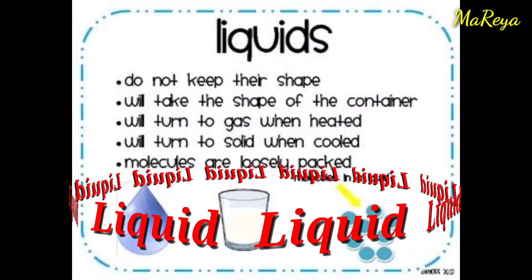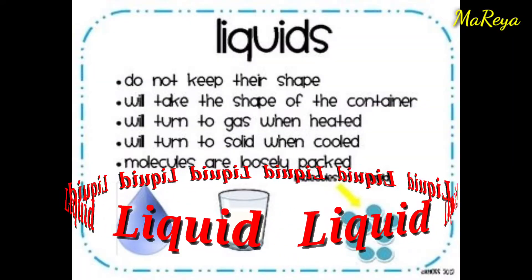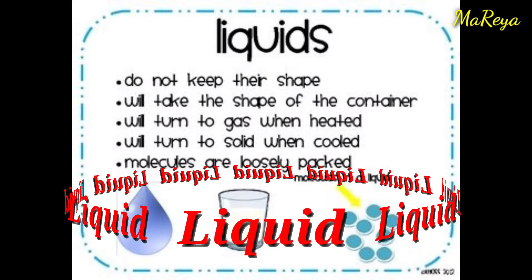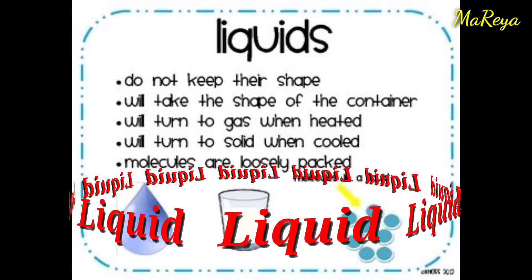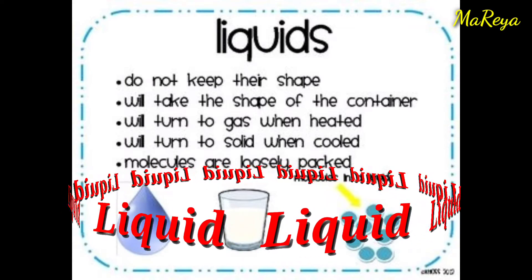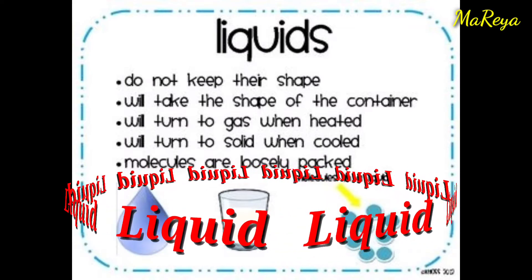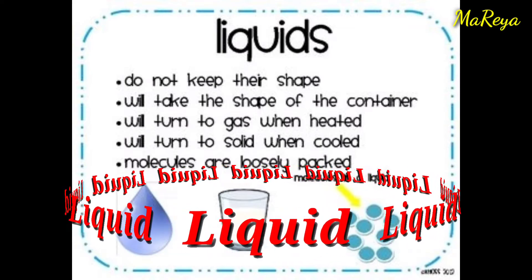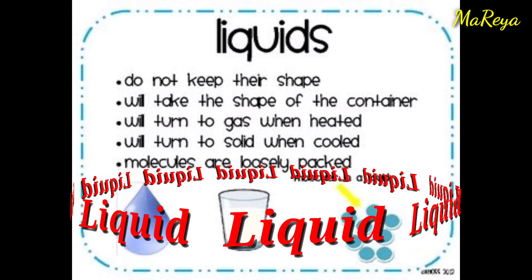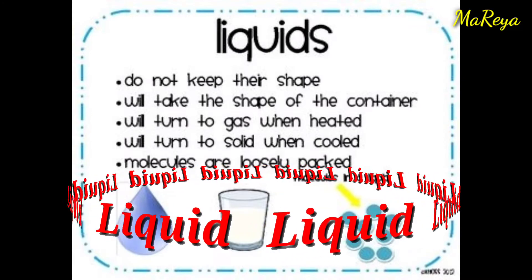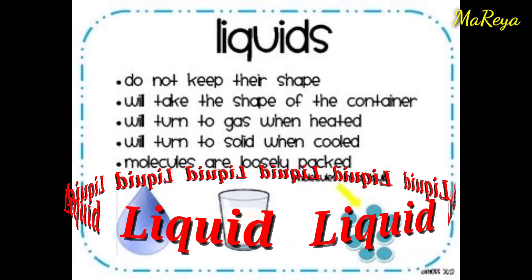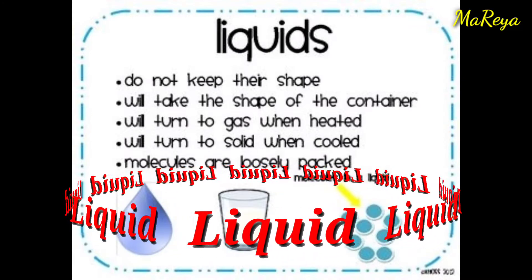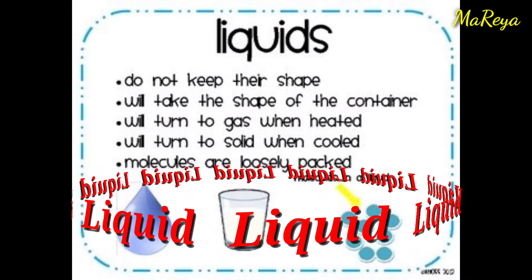Liquids do not keep their shape. They will take the shape of the container. They will turn to gas when heated and will turn to solid when cooled. Molecules are loosely packed.